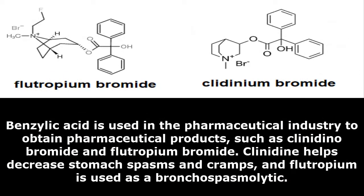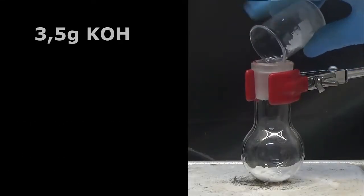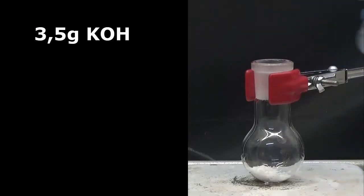Benzylic acid is used in the pharmaceutical industry to obtain pharmaceutical products such as clidinium bromide and flutropium bromide. Clidinium helps decrease stomach spasms and cramps, and flutropium is used as a bronchospasmolytic. To obtain benzylic acid, 3.5 grams of potassium hydroxide will be...